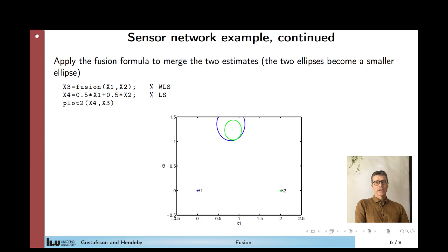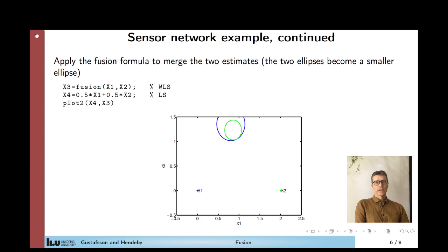And if you combine them with the weighted least squares method, we get the green ellipse read in this plot here, which can be compared to the least squares method where you just take the average of x1 and x2. Then you get the blue ellipse read, which is considerably larger than the green one. So this is the motivation why weighted least squares is usually to prefer to least squares for this kind of problems.